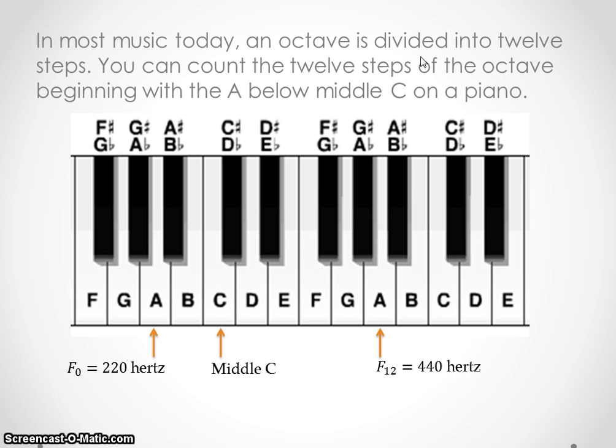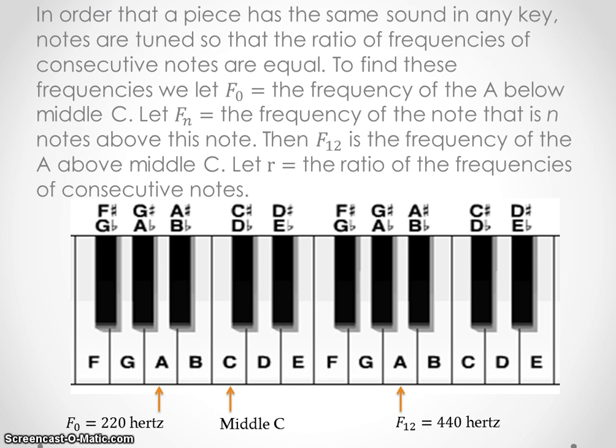In most music today, an octave is divided into 12 steps. You can count the 12 steps of the octave beginning with A below middle C on a piano. So literally, you would have 12 different steps here. You'd have 1, 2, 3, 4, 5, 6, 7, 8, 9, 10, 11, 12, and then we're back at A again. Notice I use these keys up here because, as you know, these are also notes that are used when playing music.